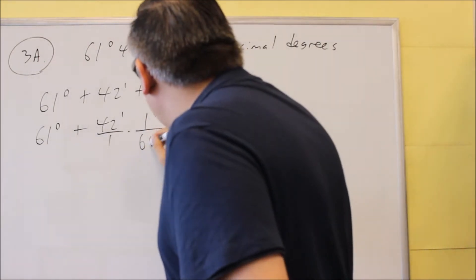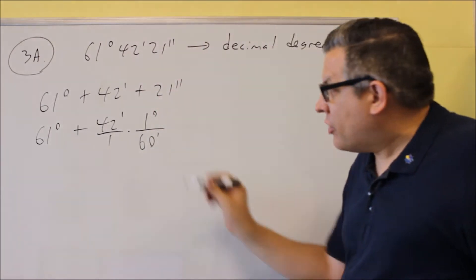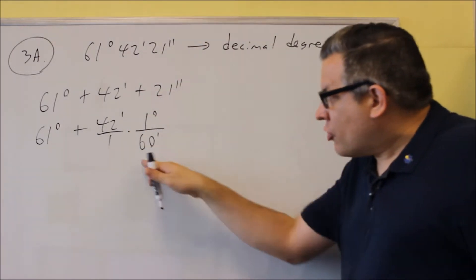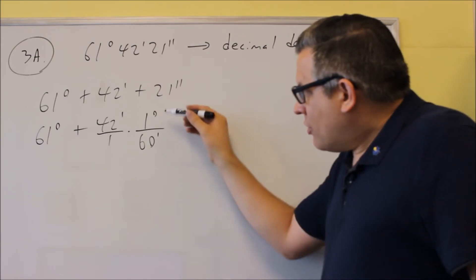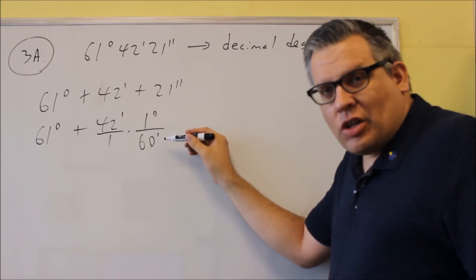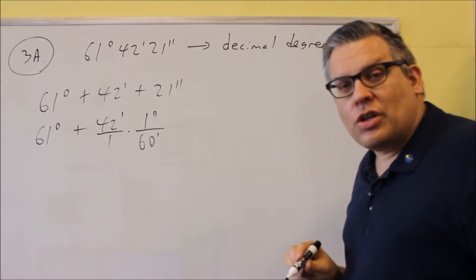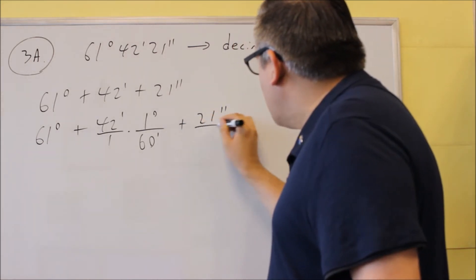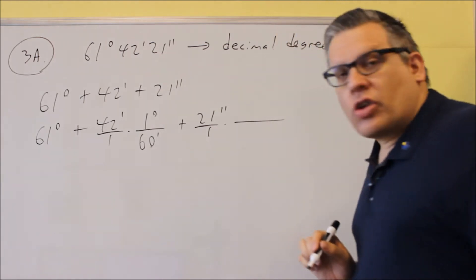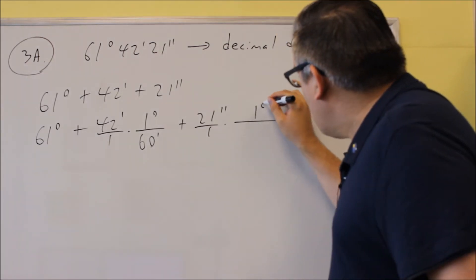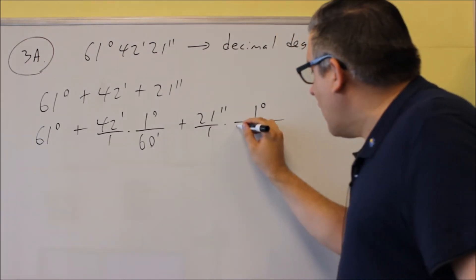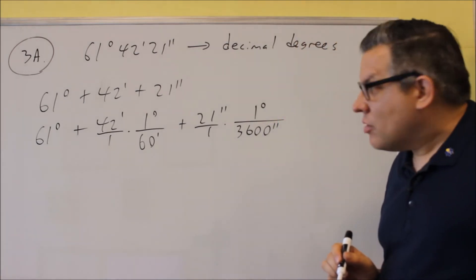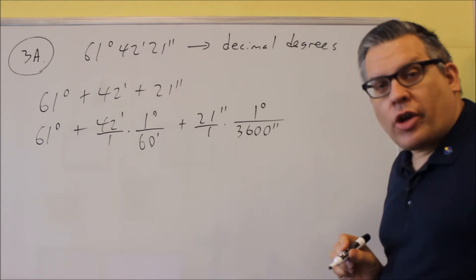So you would have 1 degree on top and put the minutes down below. You want the minutes to cancel so it's left in terms of degrees — that's why we put 60 on the bottom. Next, we have 21 seconds, and the conversion for this is 1 degree is the same thing as 3,600 seconds, which allows you to cancel that one out.